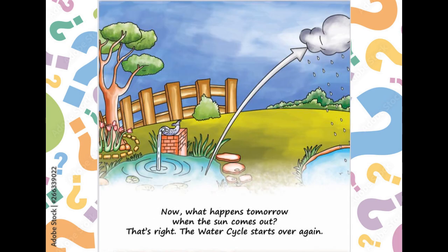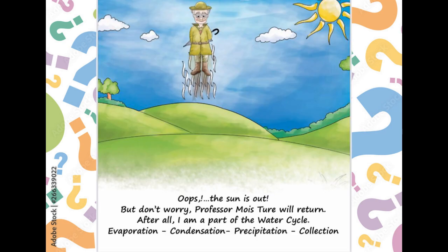Now, what happens tomorrow when the sun comes out? That's right — the water cycle starts over again. Oops, the sun is out. But don't worry, Professor Moisture will return. After all, I'm part of the water cycle.